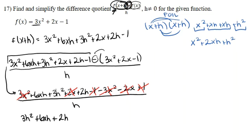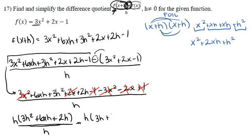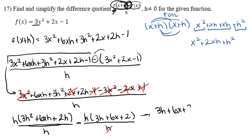We have a common factor of h in the numerator. Factoring it out gives h times (3h plus 6x plus 2), divided by h. We then cancel the h in the numerator with the h in the denominator, leaving us with the simplified difference quotient: 3h plus 6x plus 2.